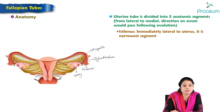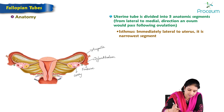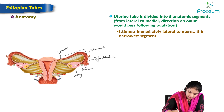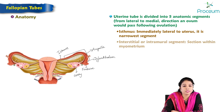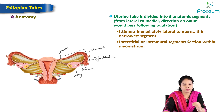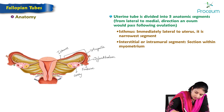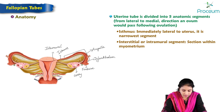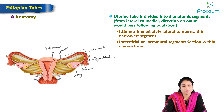The isthmus is immediately lateral to the uterus and is the narrowest segment, as its name suggests. Next comes the interstitial or intramural segment — the section within the myometrium of the uterus. These are the five parts of the uterine tube or fallopian tube.